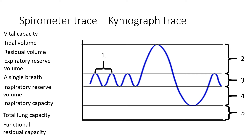You have a number of different terminologies when talking about spirometer traces and you have to be able to identify on a spirometer where you'll find each of these things: vital capacity, tidal volume, residual volume, expiratory reserve volume, inspiratory reserve volume, inspiratory capacity, total lung capacity, and functional residual capacity.